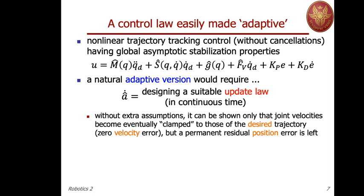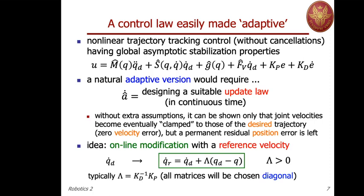This observation motivates a slight modification of the control law. Even in the non-adaptive case, it has global trajectory tracking characteristics if the parameters are correct. The modification introduces a reference velocity by adding the position error multiplied by a typically diagonal positive definite matrix lambda. So wherever you find q-dot-desired or q-double-dot-desired, you replace them with q-dot-r or q-double-dot-r, which can be computed by differentiation of this formula.